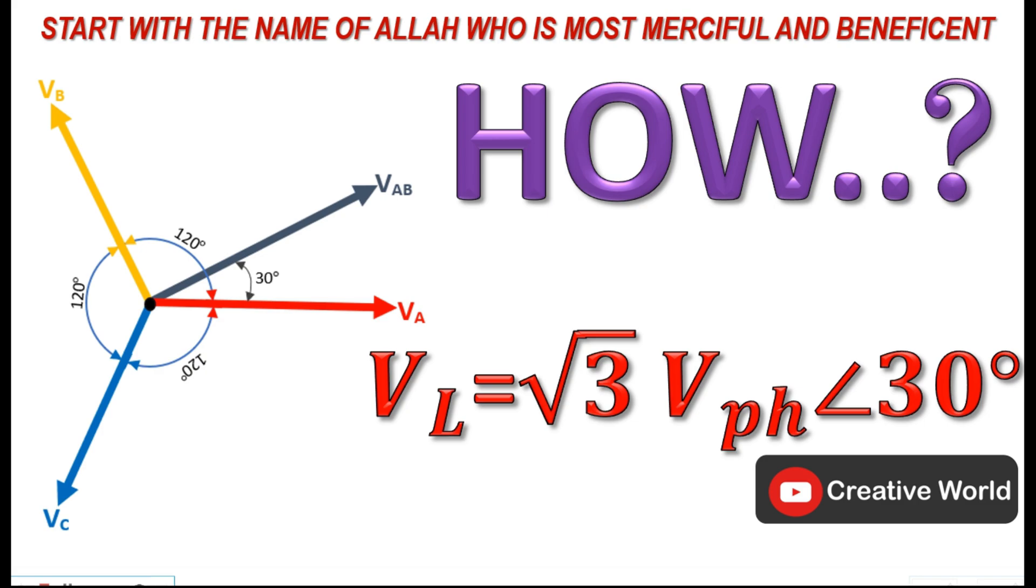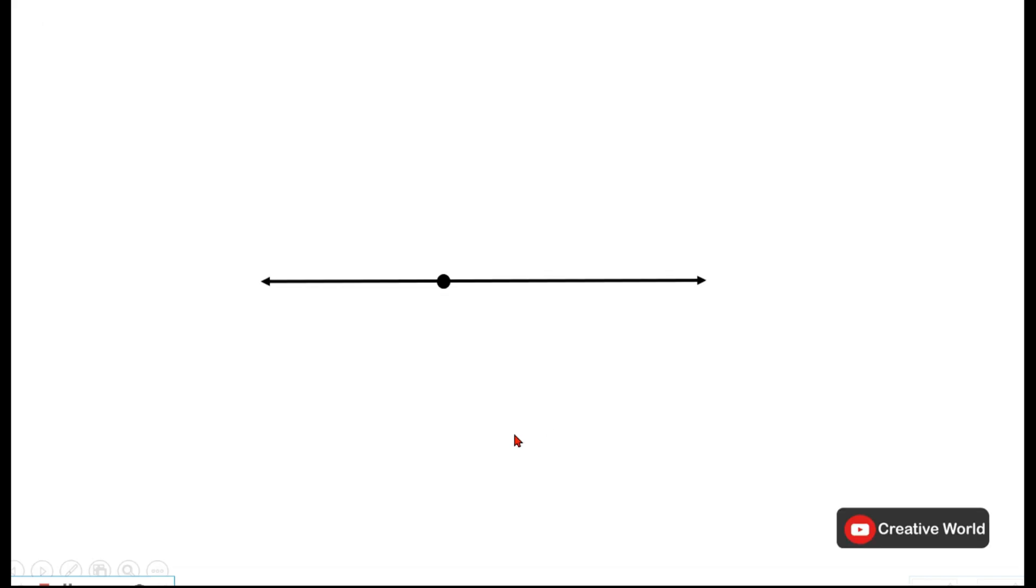So today I would like to share with you how and why we take a line voltage as square root three times V phase, and the angle of line voltage as 30 degrees leading the phase voltage. So let's begin.